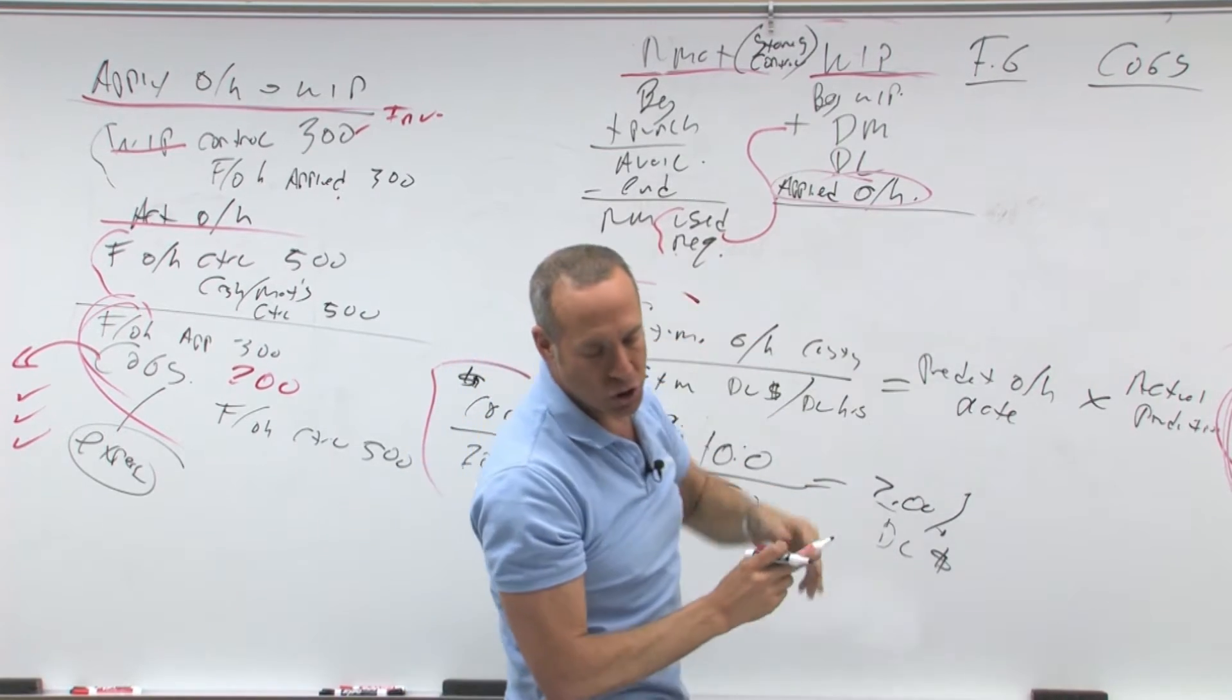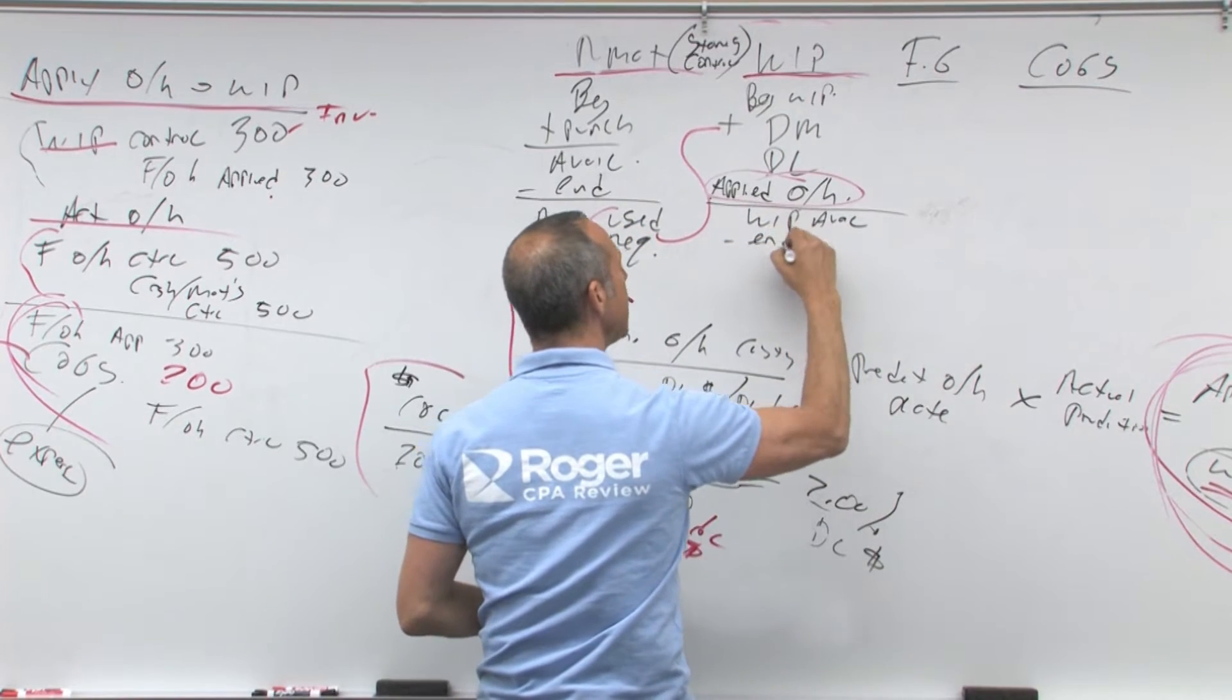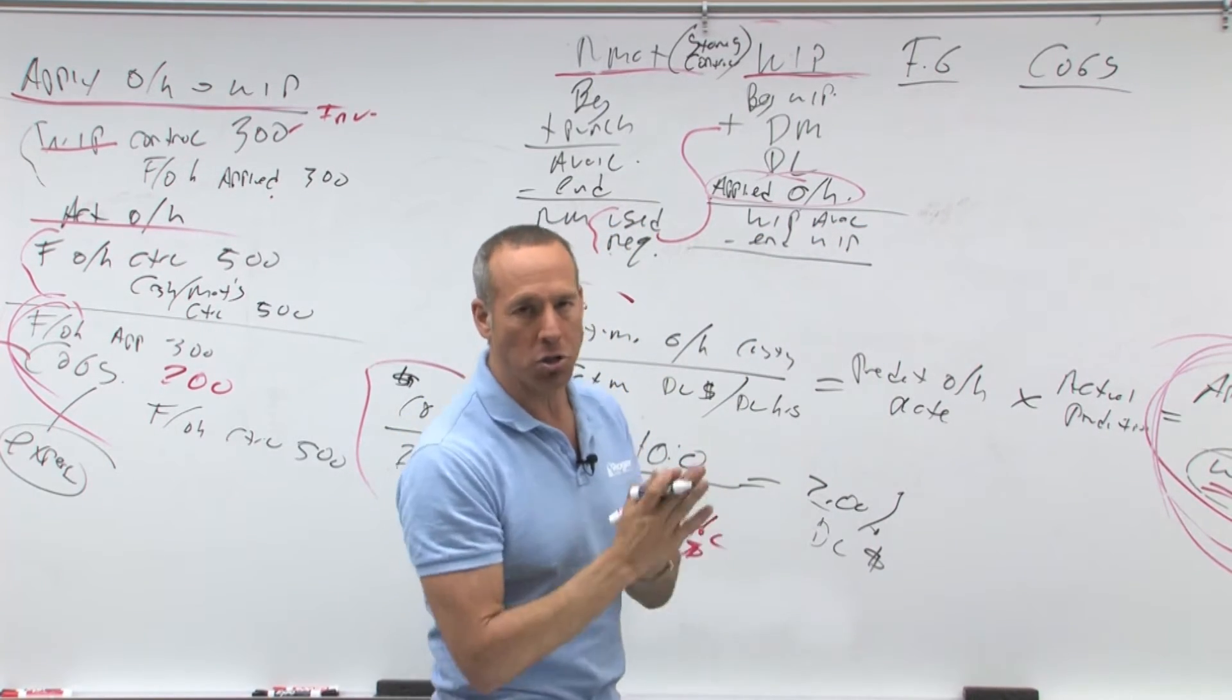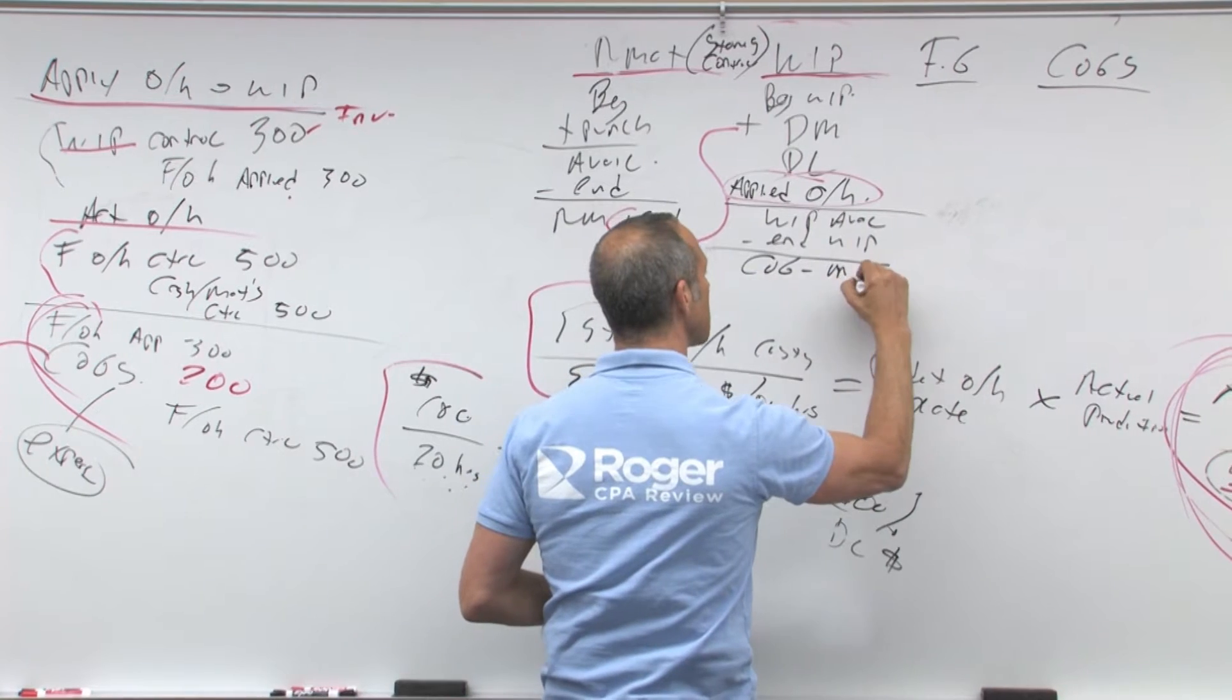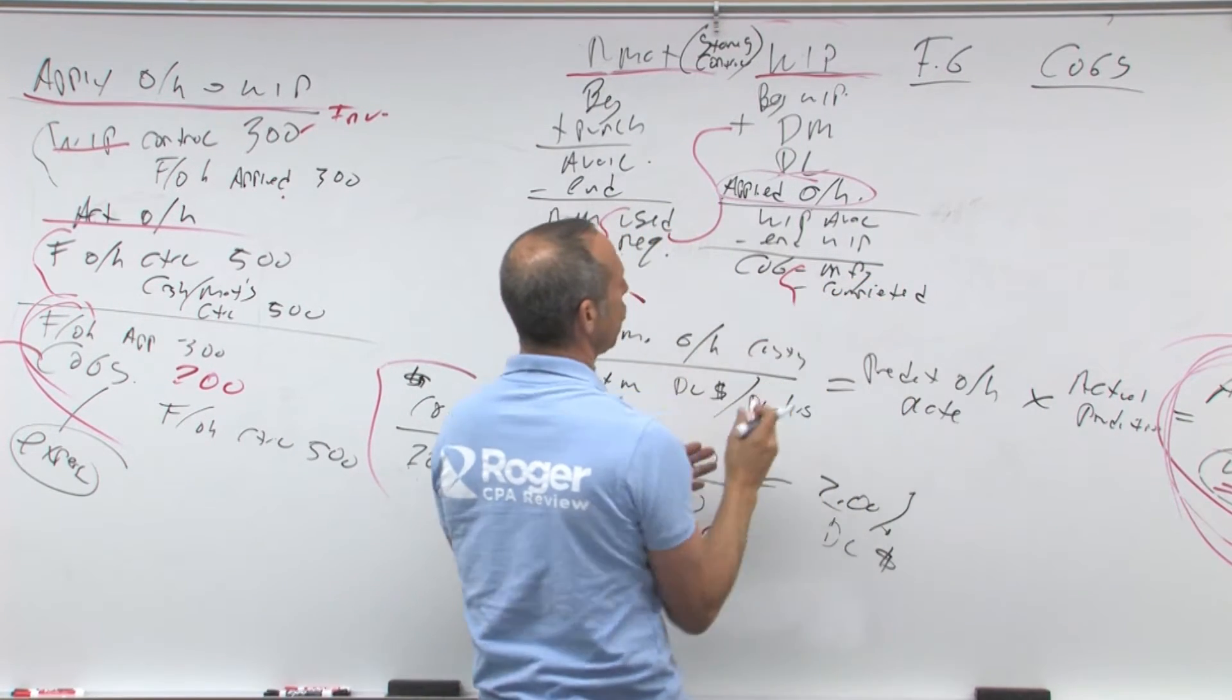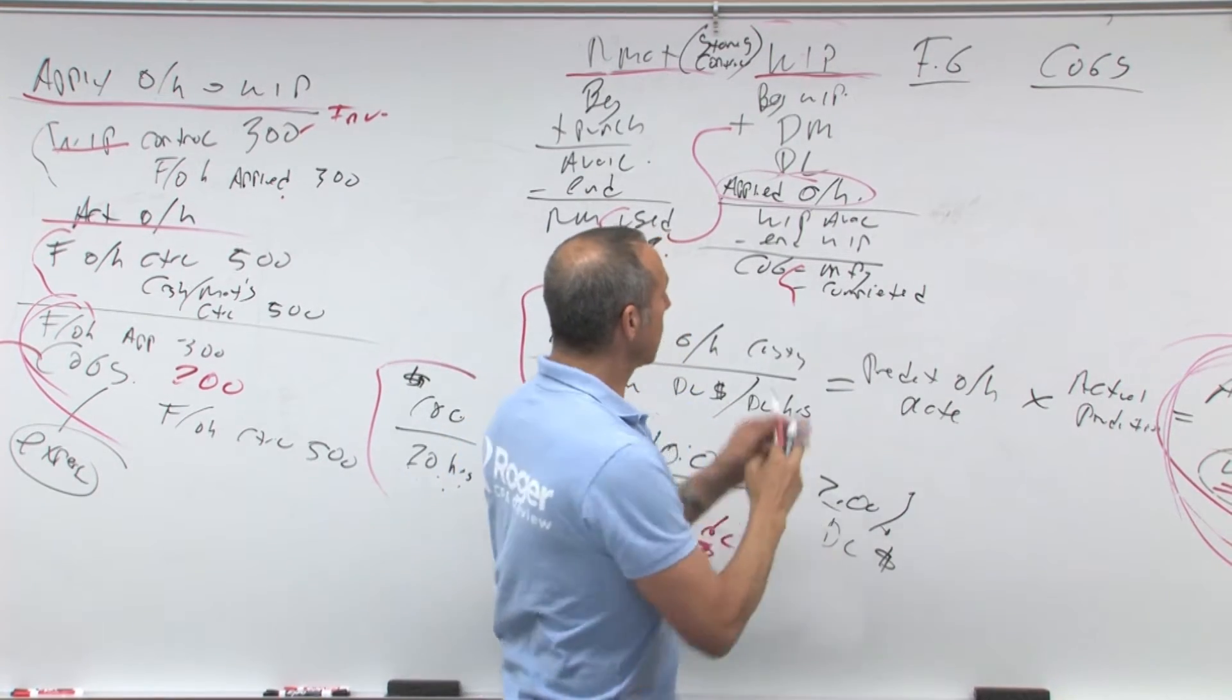So that gives you your WIP available minus ending work in process equals something called cost of goods completed or cost of goods manufactured. Manufactured or completed. And they'll use either of those words. Don't confuse it with cost of goods sold because they haven't been sold, that's completed or manufactured.